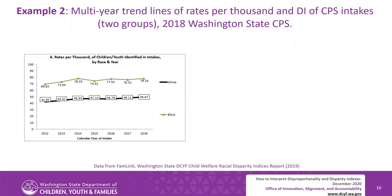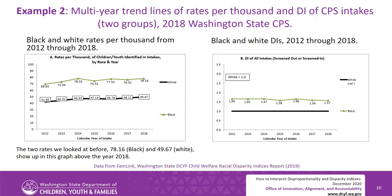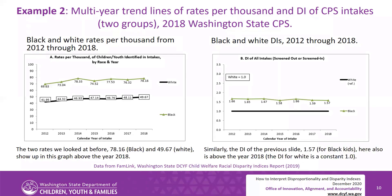Example 2: multi-year trend lines of rates per thousand and DI of CPS intakes, two groups, 2018 Washington state CPS. Black and white rates per thousand from 2012 through 2018, and black and white DIs from 2012 through 2018. The two rates we looked at before — 78.16 black and 49.67 white — show up in this graph above the year 2018. Similarly, the DI of the previous slide, 1.57 for black kids, also appears above the year 2018. The DI for white is a constant 1.0.